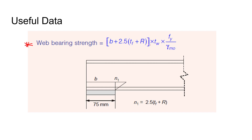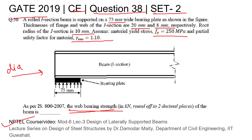All the terms in the formula are mentioned here. I will put in the values of all the terms and solve the question. B is nothing but the bearing plate width, which is given as 75 mm.